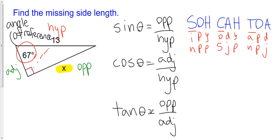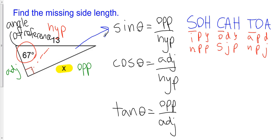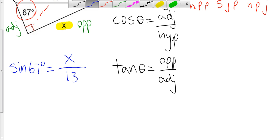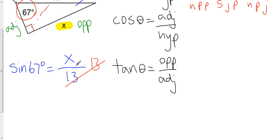Coming back to the problem, I need to pick one of these trigonometric ratios. I'm going to do that by looking at what I want — the opposite side — and what I have — the hypotenuse. Opposite over hypotenuse refers to the sine ratio. So I'm going to set up an equation: the sine of 67 degrees is equal to the opposite side, which is x, over the hypotenuse, which is 13. I'm going to isolate x by multiplying both sides by 13, giving me x equals 13 times the sine of 67 degrees.